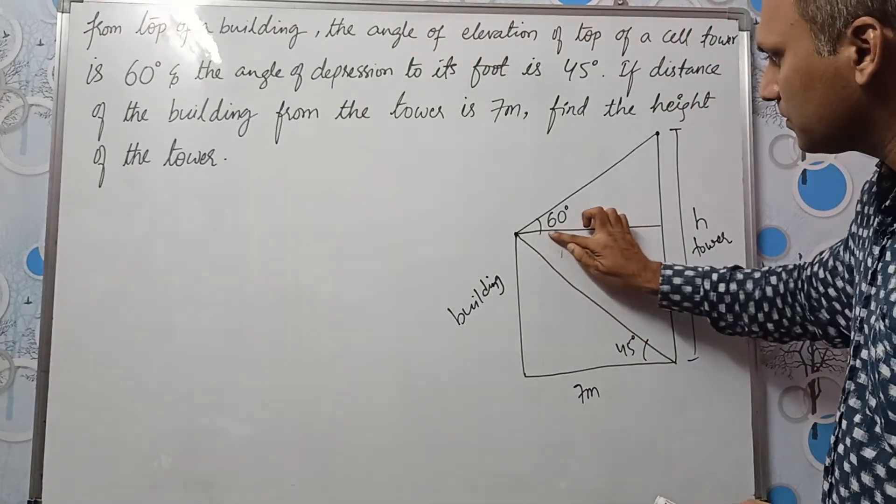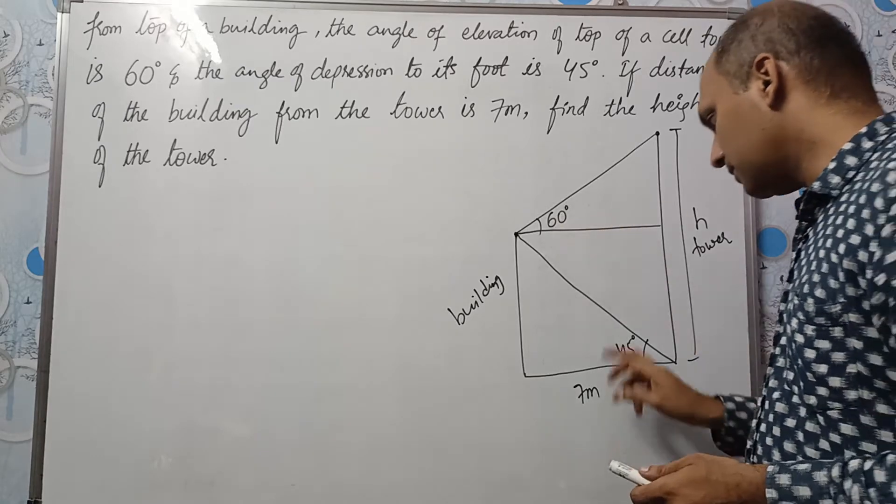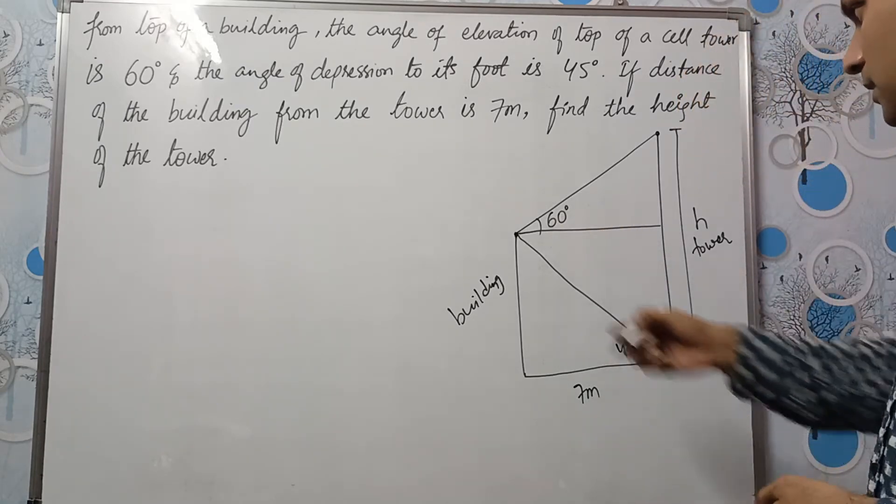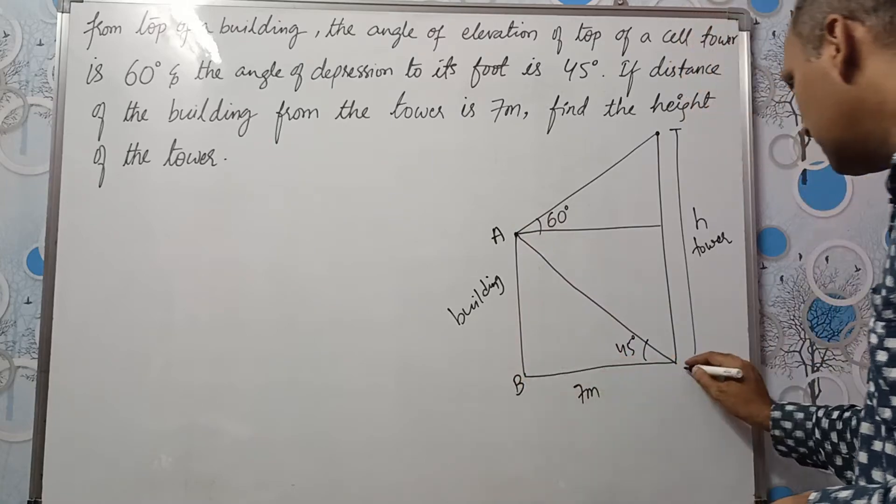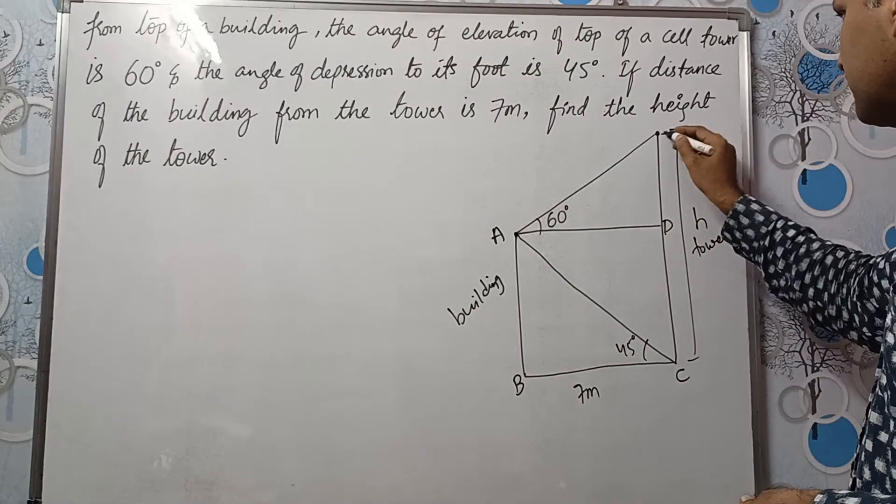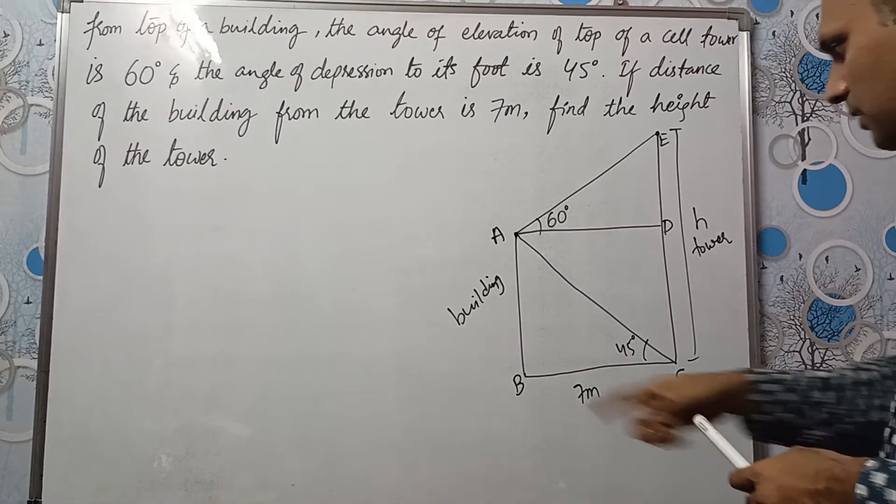So what I'll do is I'll drop this. So this is 45. Let us name this A, B, C, D and E.